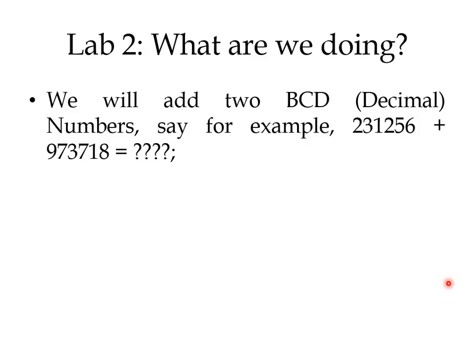We are simply trying to add two BCD numbers. Remember the BCD numbers from digital circuit class. BCD numbers are just decimal numbers — you can simply think of these as decimal numbers. So whatever microprocessor we have, using the instruction set of the microprocessor, how can we add these two numbers?